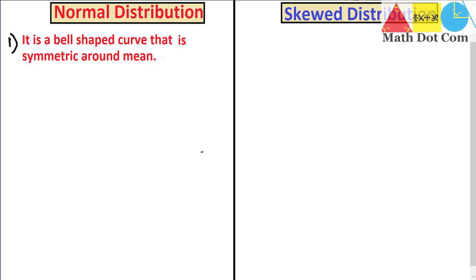A normal distribution basically refers to a bell-shaped curve that is symmetric around the mean. It means that the data is uniformly distributed on both sides of the mean.